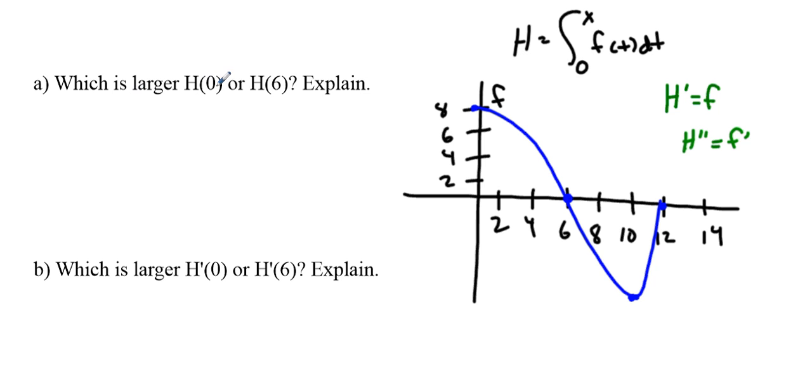Which is larger, h of 0 or h of 6? Well, h of 0 means we're going to set this up and go from 0 to 0 of f of t dt. In doing so, the integral from 0 to 0 is equal to 0.